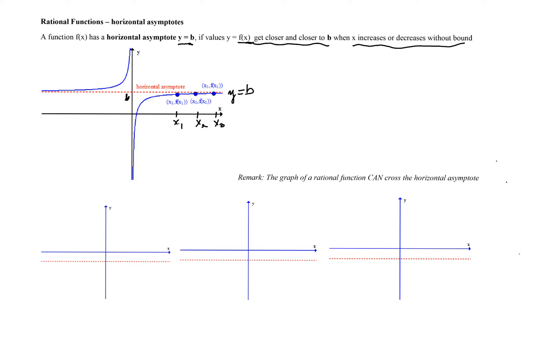This is the relationship between the graph of the function in blue and the horizontal line, which we call the horizontal asymptote. By definition, we are looking at x values increasing without bound on the right-hand side and decreasing without bound on the left-hand side. So the existence of a horizontal asymptote determines the end behavior of the function — how the function behaves when the values of x are large and negative on the left end, and large and positive on the right.